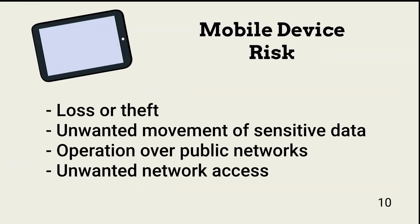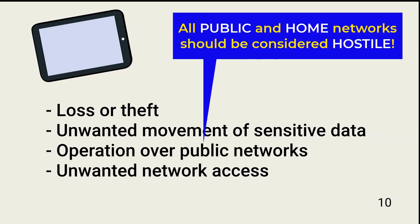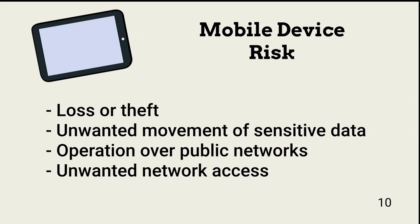The safeguards we've discussed apply to all devices, but mobile devices and servers need additional attention. One of the biggest risks associated with mobile devices is they're lost via theft or other means. Many mobile devices contain large amounts of sensitive data and are configured to connect via certificates. Mobile devices connecting to public networks are at increased risk of compromise. All public networks, both wireless and wired, should be considered hostile.